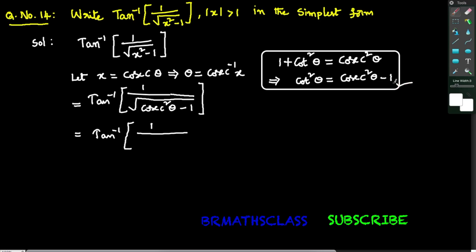Now observe: what is the formula for cosecant squared theta minus 1? The formula is cot squared theta. So under the square root, cosecant squared theta minus 1 becomes cot squared theta. That equals tan inverse of 1 divided by the square root of cot squared theta.